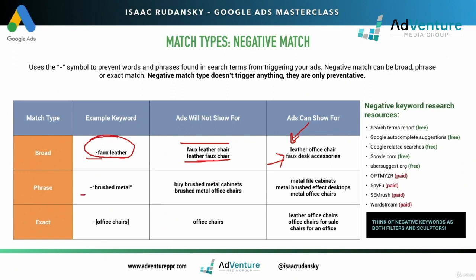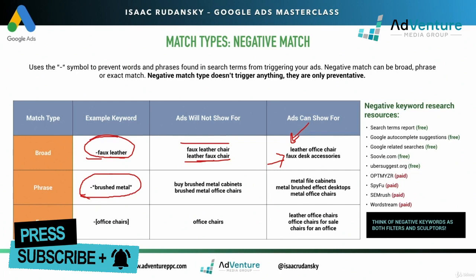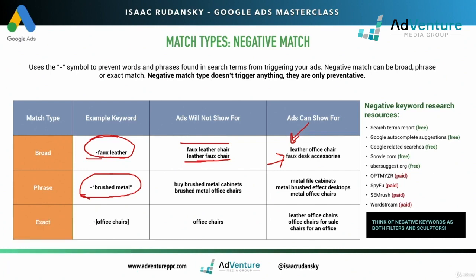Now let's take a look at negative phrase match. With a negative phrase match, enclosed in quotation marks, I'm telling Google that when this specific phrase in this specific order shows up in any search term, I do not want my ad to show. For example, negative brushed metal in quotes means ads will not show for buy brushed metal cabinets or brushed metal office chairs, because brushed metal appears in that order in both search terms. But ads can show for metal file cabinets or metal brushed effect desktops, because metal and brushed appear in a different order. The defining characteristic of phrase match is that the words in quotation marks must be in that order.